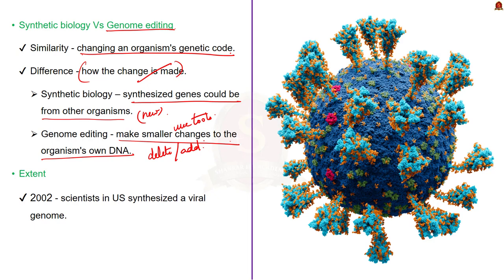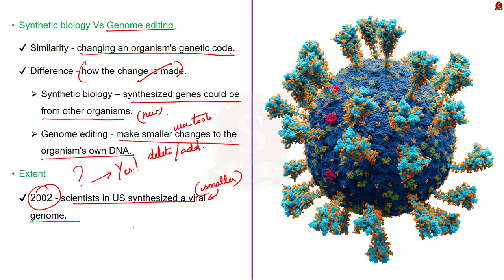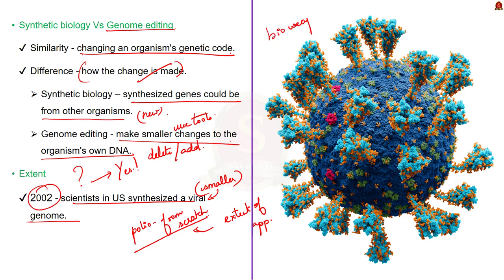In synthetic biology, scientists typically stitch together long stretches of DNA and insert them into an organism's genome — these synthesized pieces could be genes from other organisms or entirely novel. In genome editing, scientists use tools to make smaller changes to the organism's own DNA, such as deleting or adding small stretches of DNA. Researchers can even synthesize an organism's entire genome. In 2002, scientists in the United States synthesized a viral genome for the first time, creating the polio virus from scratch. It is also feared that synthetic biology could be used to develop biological weapons.